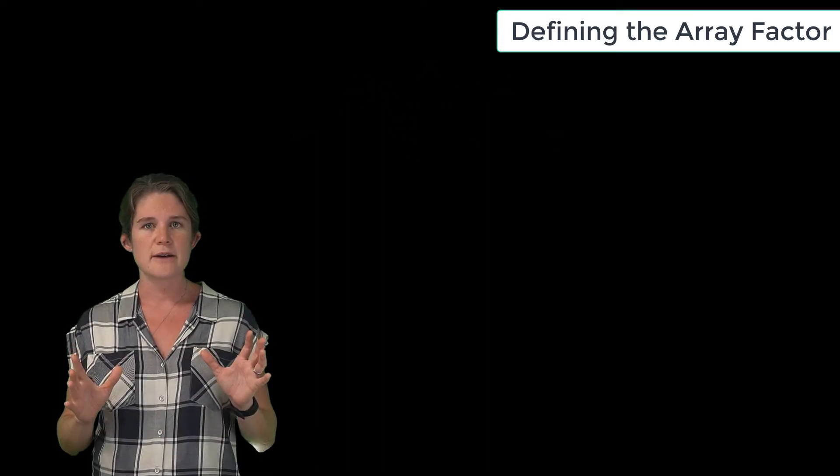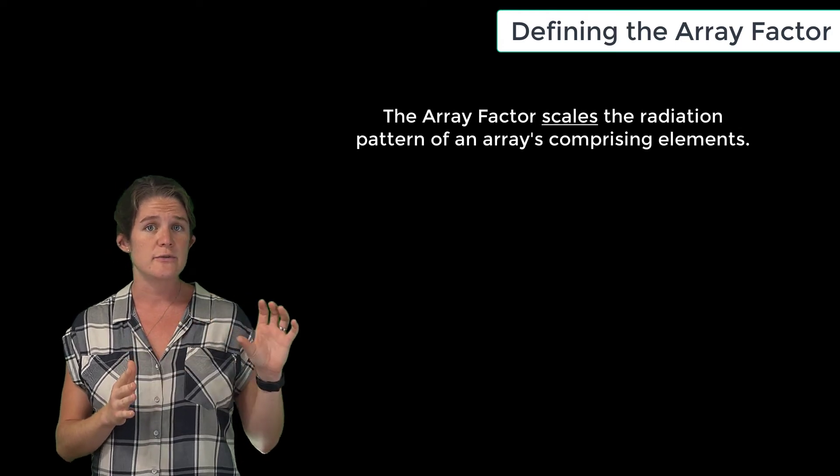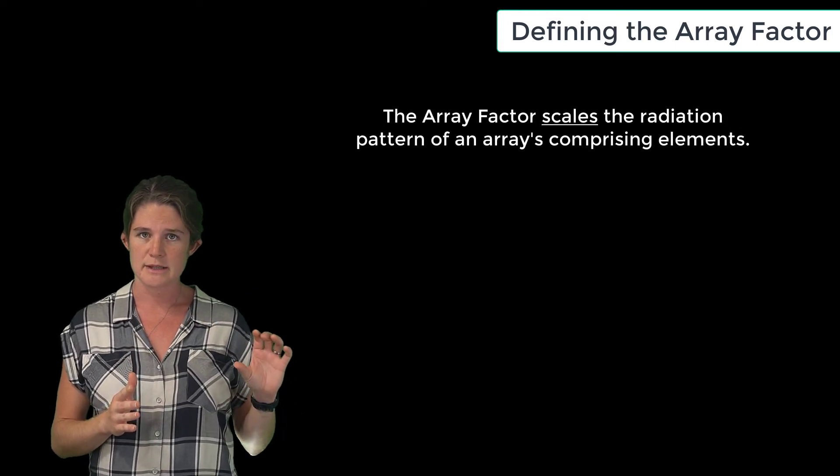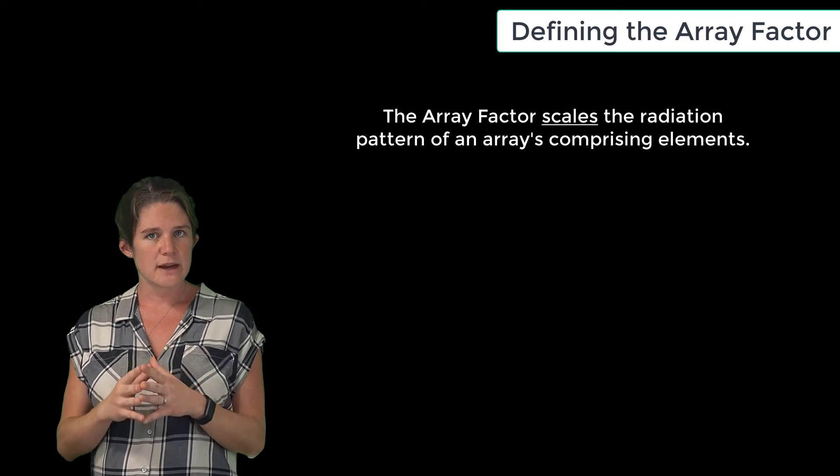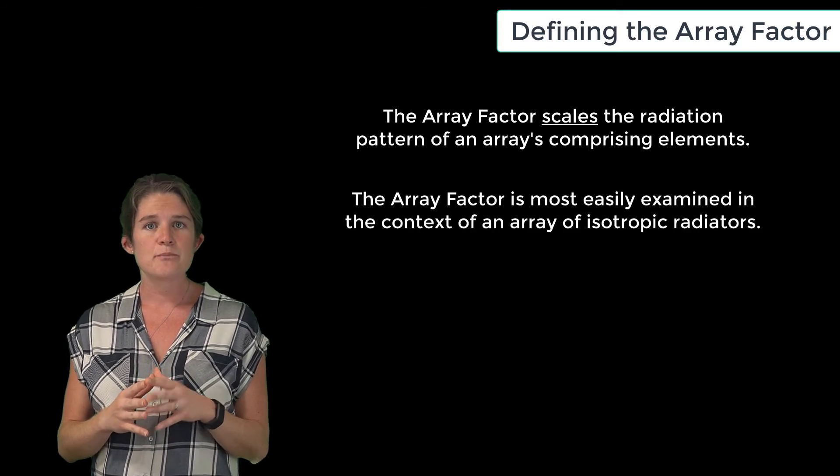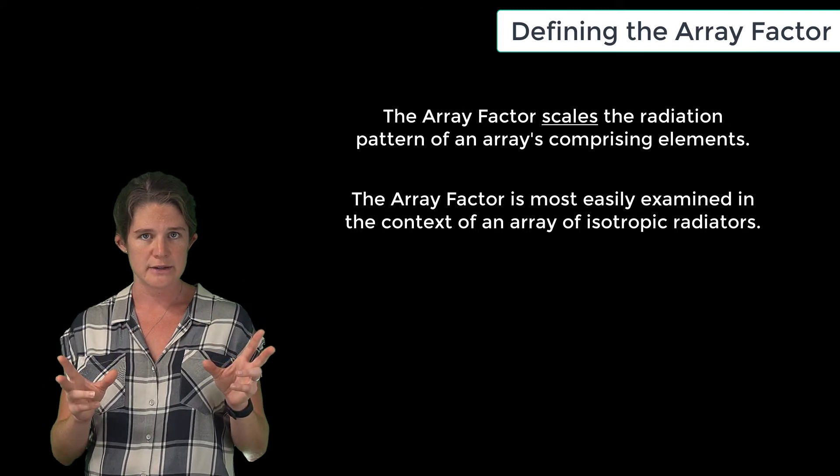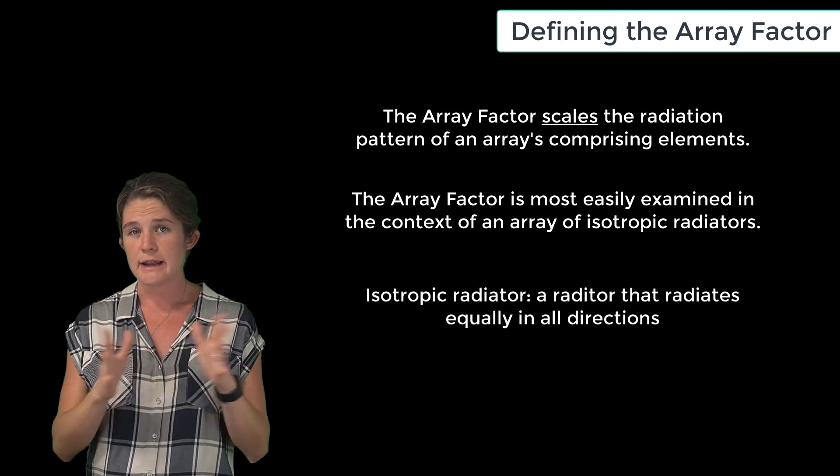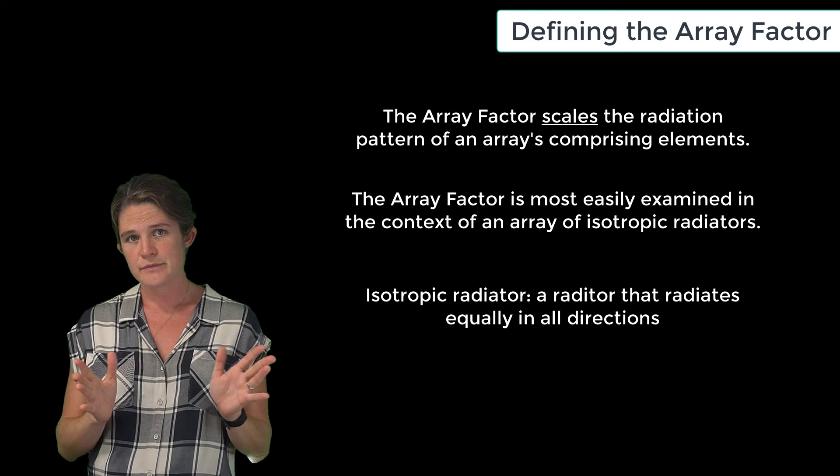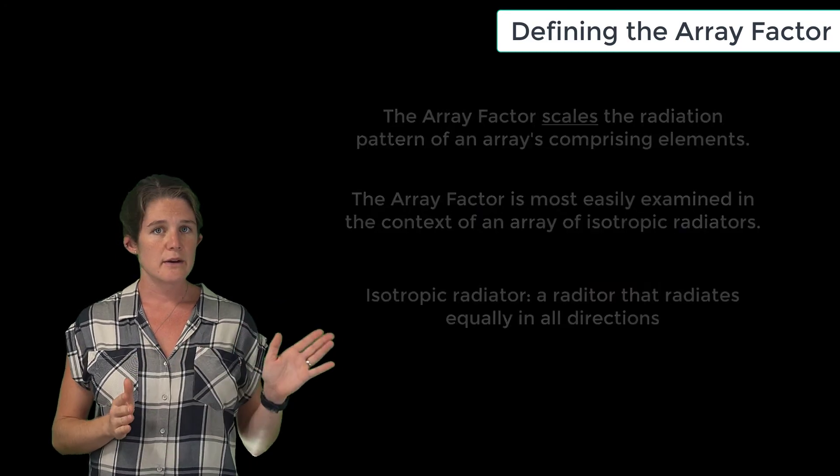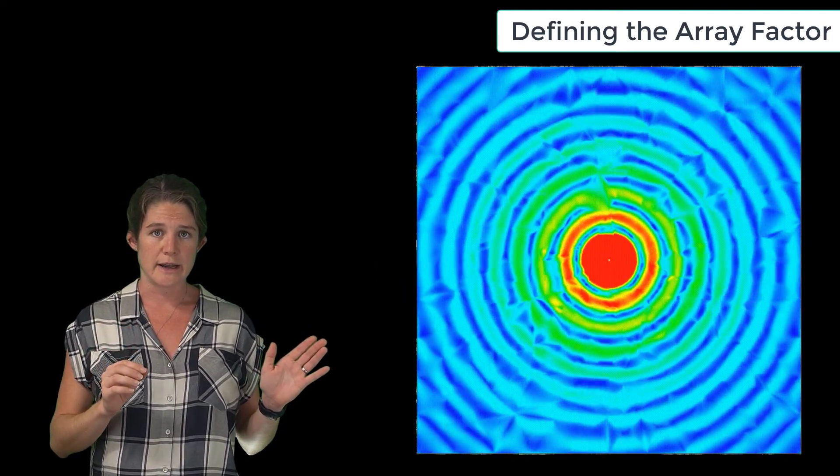Since the array factor is simply a scaling factor applied to the electric field of its comprising antenna elements, we can isolate the effect of the array factor itself by looking at the radiation from arrays comprised of isotropic radiators—radiators that radiate equally in all directions. So as an example, here is the radiated pattern from a single isotropic radiator.